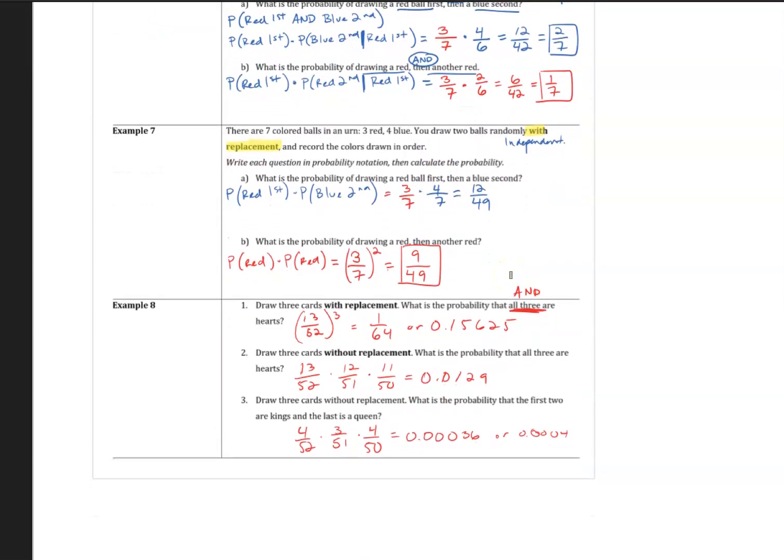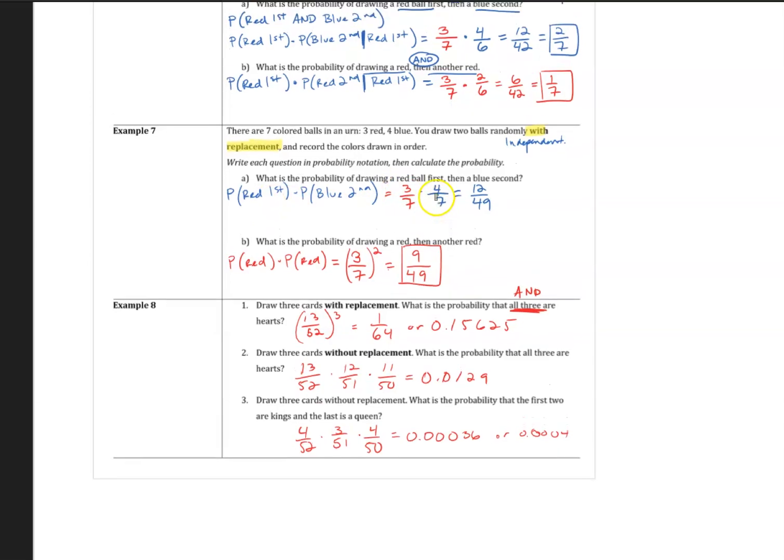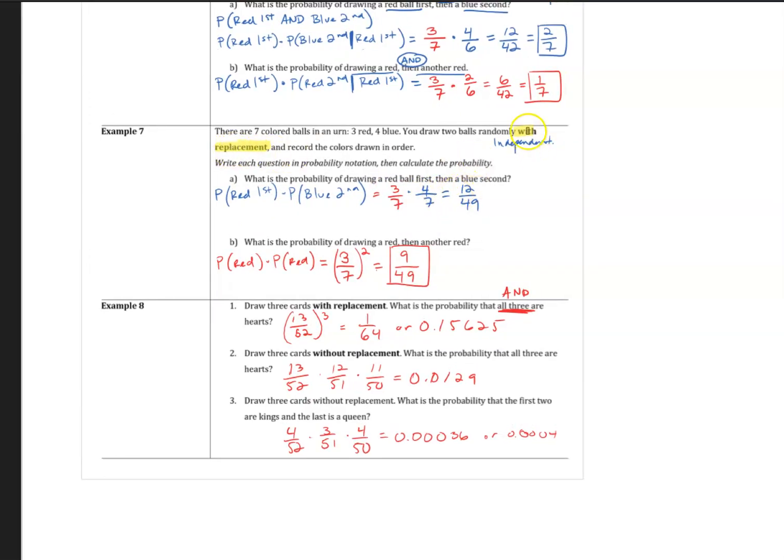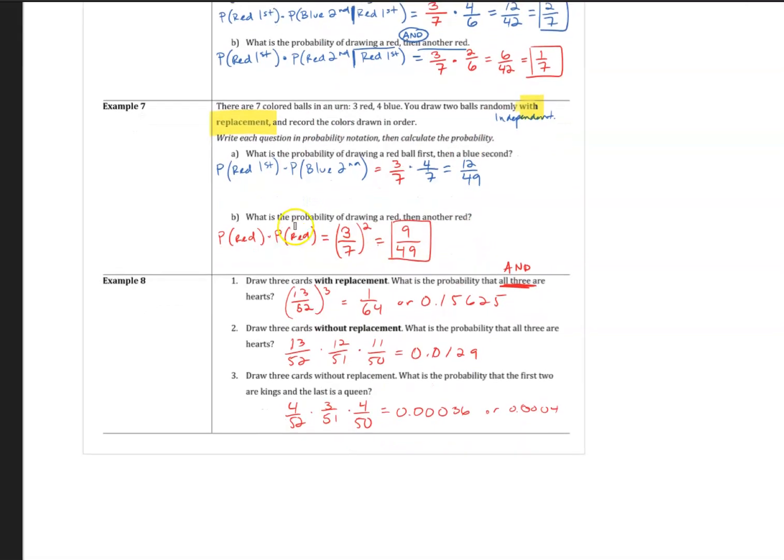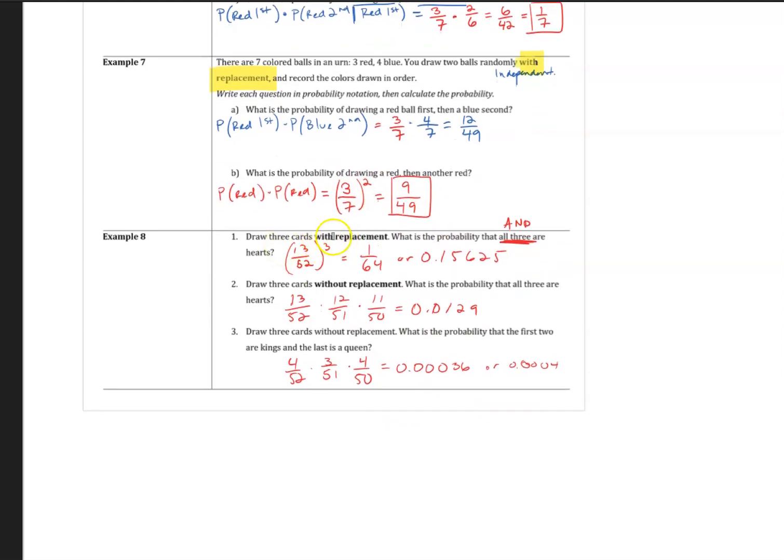Looking at example seven and eight, probability of first times the probability of the second. The first is red, and the second one is blue. You will see three out of seven times four out of seven. In this case, we have something called with replacement, so you put the ball back in, and that's what makes the events independent. The key word here is with replacement. What is the probability of drawing a red, and then another red? Three out of seven times three out of seven, or three sevenths squared.